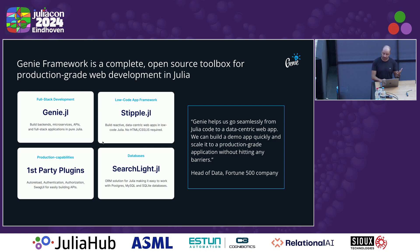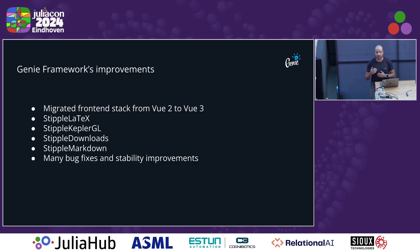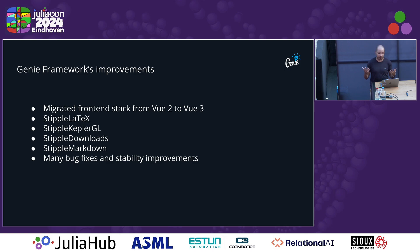Over this past year, our focus has been on improving workflows for creating data applications, so we made many improvements to Stipple. Namely, we migrated the front-end stack from Vue 2 to Vue 3 to improve support for the front-end stack. We also added many new plugins: Stipple LaTeX for rendering equations, Stipple KeplerGL for improved map visualizations, Stipple Downloads for managing file transfers, and Stipple Markdown for rendering markdown. We also fixed many bugs and made stability improvements across the entire Genie framework codebase.